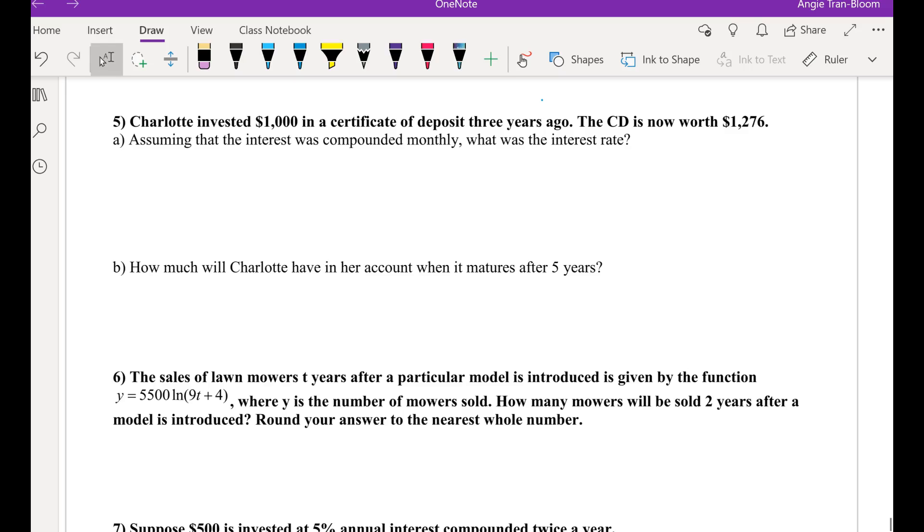All right, Ben, can you please help me read that first sentence in Example 5? Charlotte invested $1,000 in a certificate of deposit. The CD is now worth $1,076. Perfect. So, Charlotte invested $1,000 in a CD, certificate of deposit, three years ago. It is now worth $1,276.